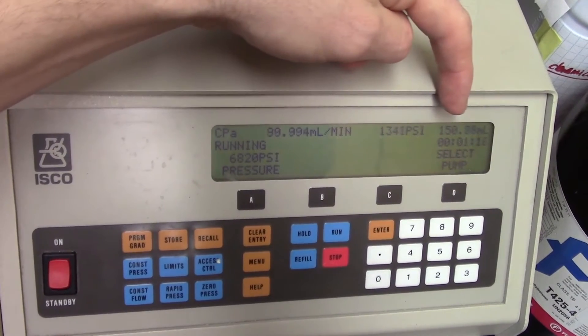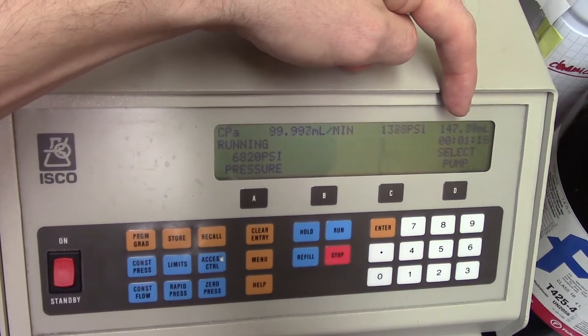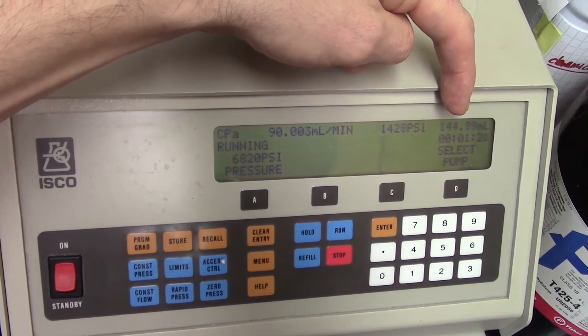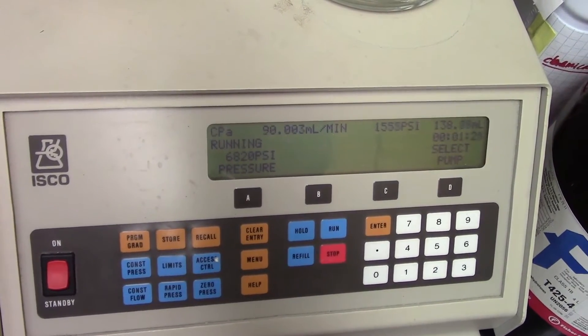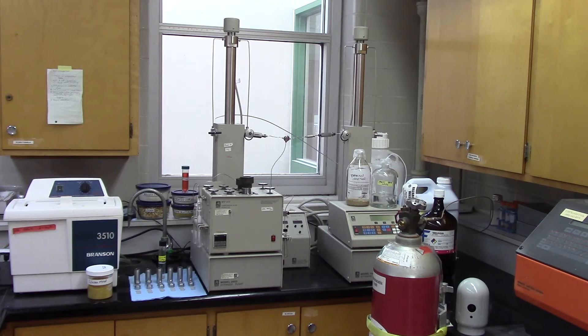The control panel should show the pressure rising and the volume dropping. If that's not the case, check your valves again to make sure everything's closed. You can easily tell when the pressure is approaching the set level by the change in pitch.